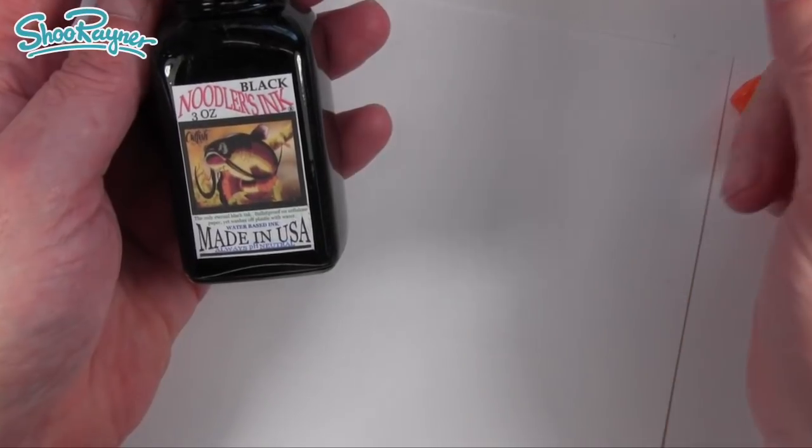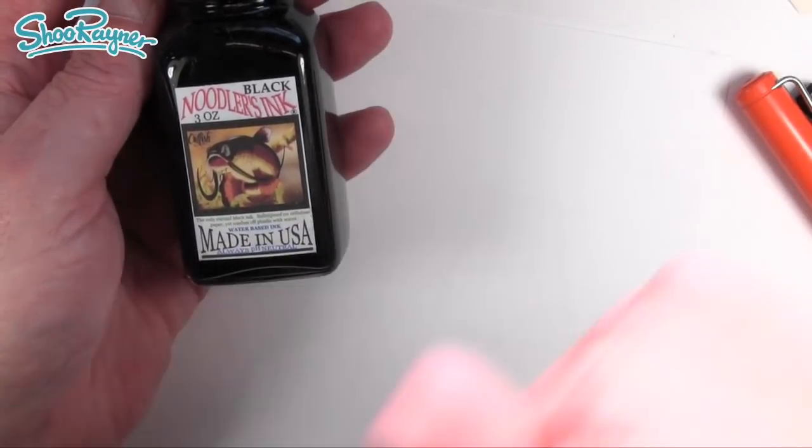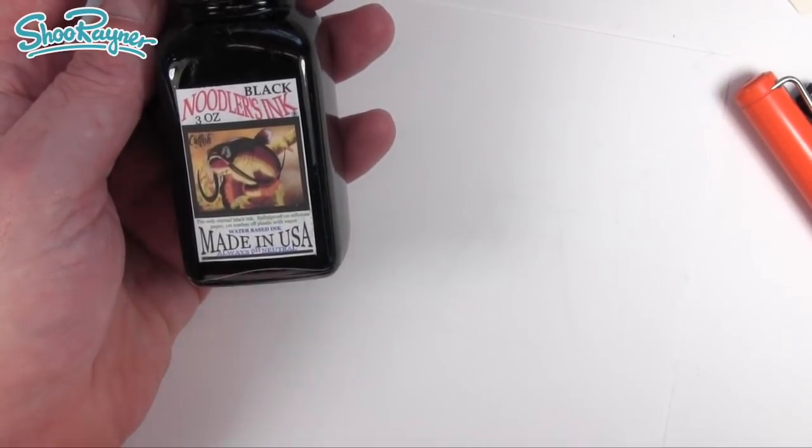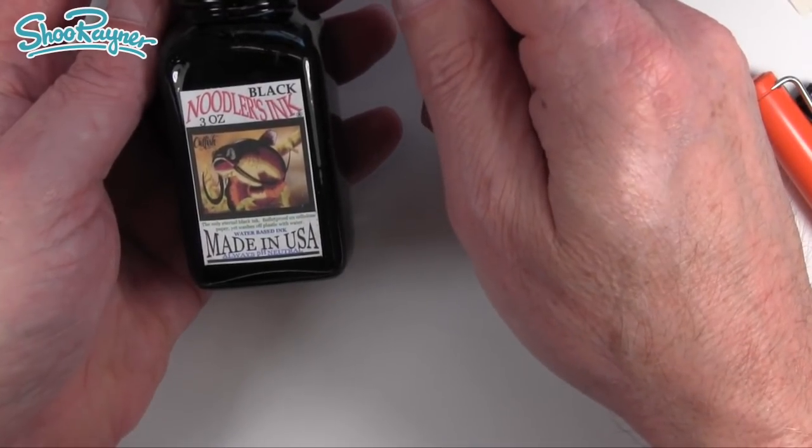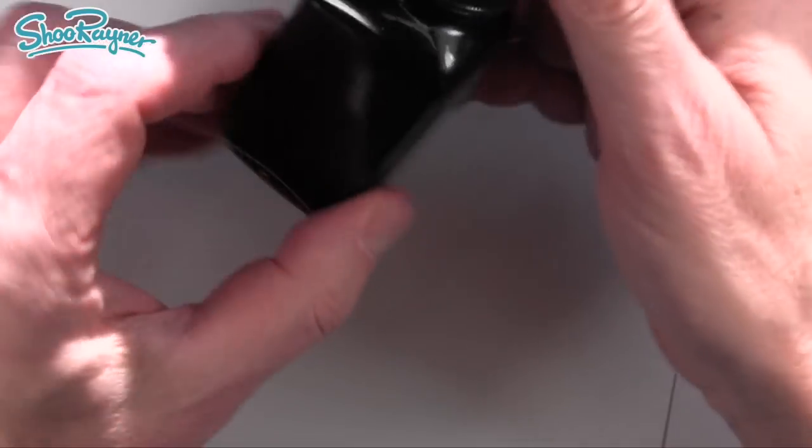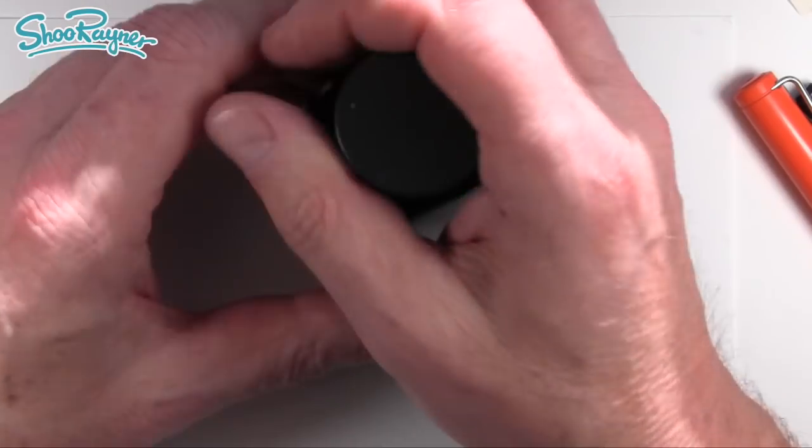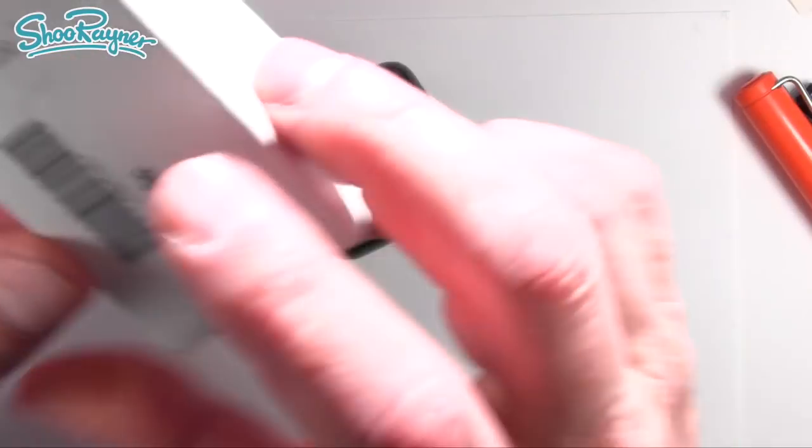Bulletproof. The only eternal black ink. Bulletproof on cellulose paper, yet washes off plastic with water. Water-based ink, made in the USA. Always pH neutral. That's all it says. There's not a lot on the box either.